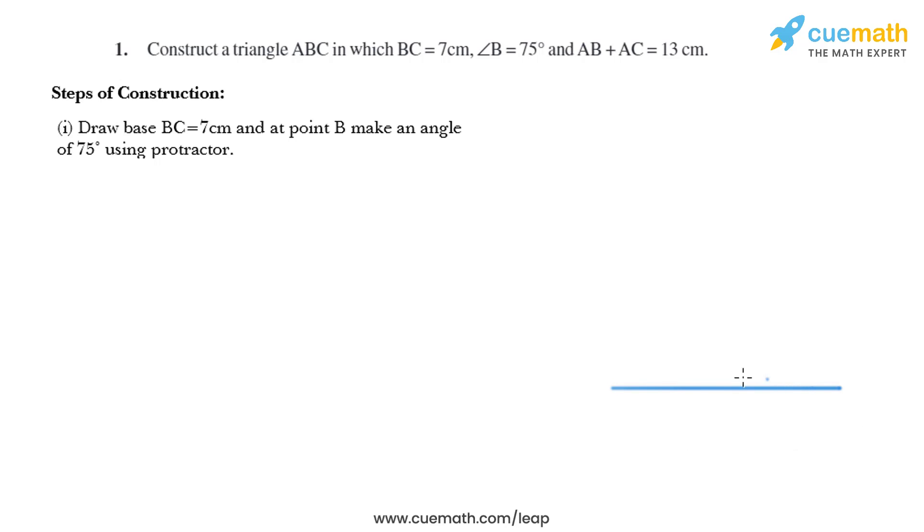We will draw base BC of 7 centimeter using a ruler. So that is B and that is C, and that is 7 centimeter. Now with B as center we'll use protractor and will make an angle of 75 degrees.